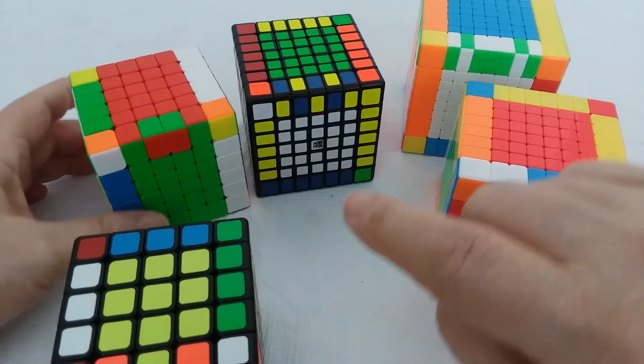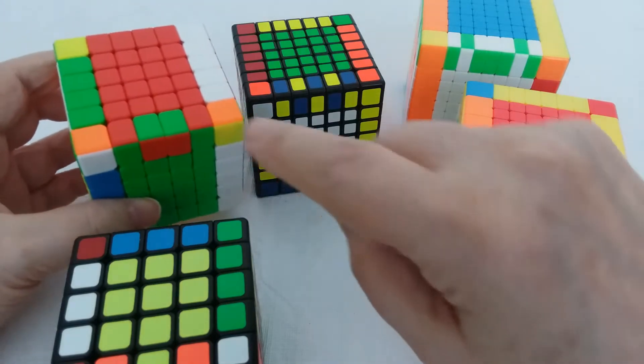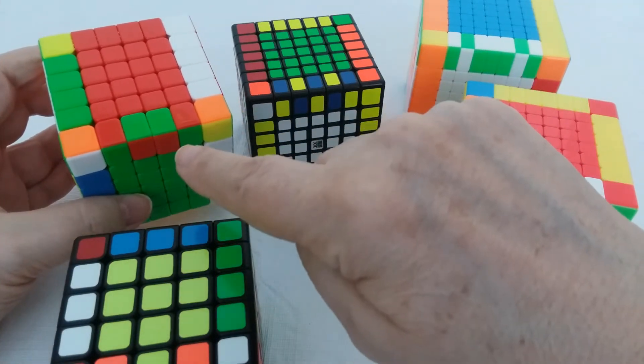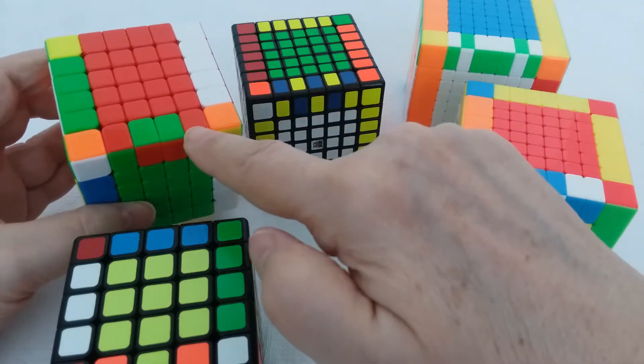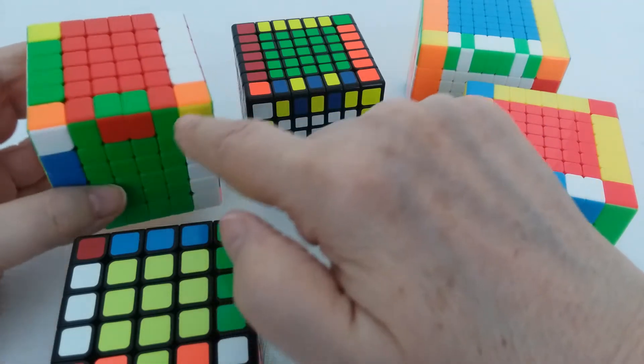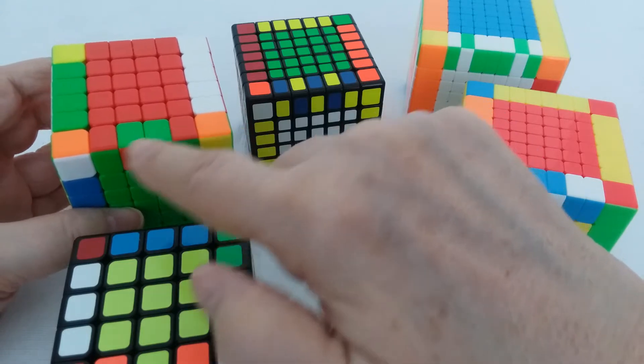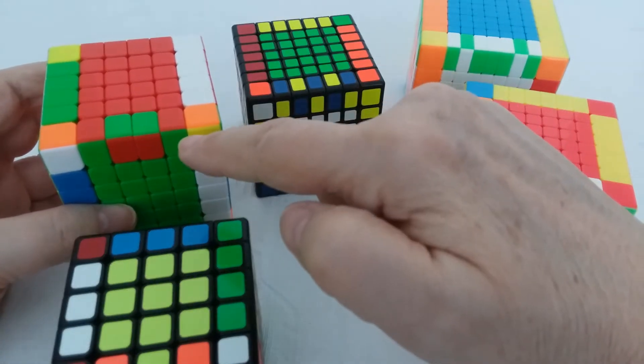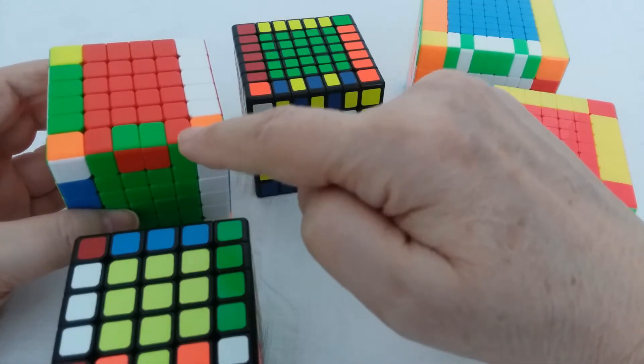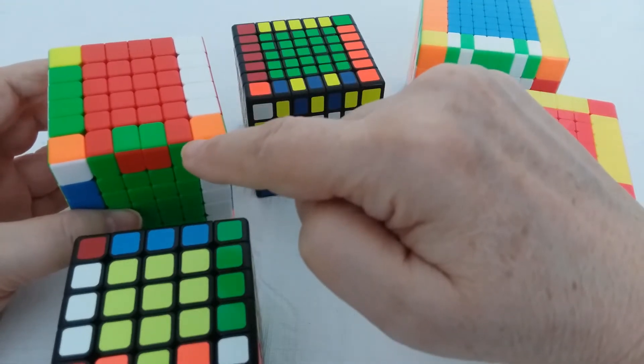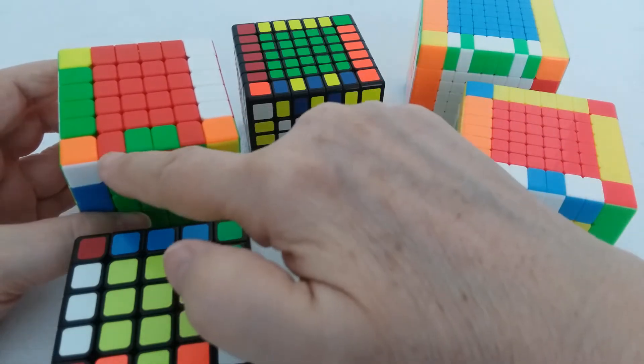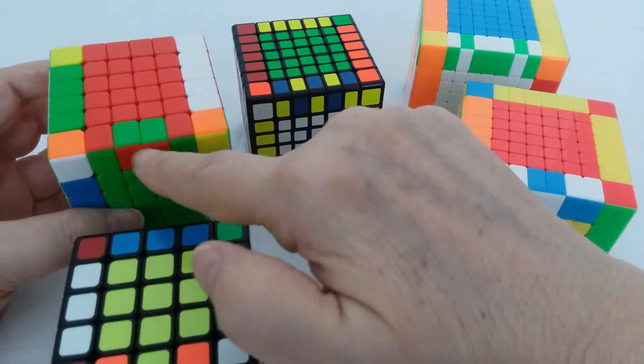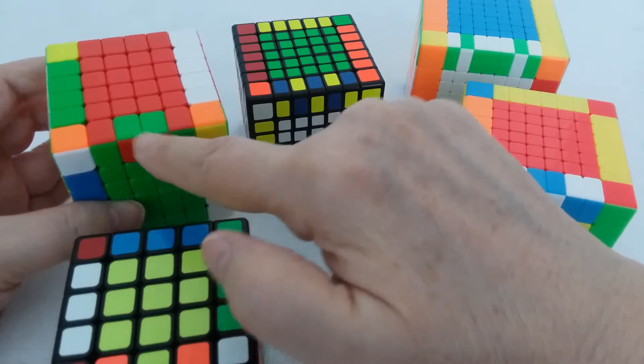We have a 6x6 where, same situation, we have all of the other edges done except this last edge. And in this last edge we have two pieces that are flipped. I'll get to this in a minute, but on these even cubes you could look at this two ways - either having the end pieces flipped or the center two pieces flipped.